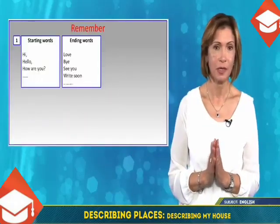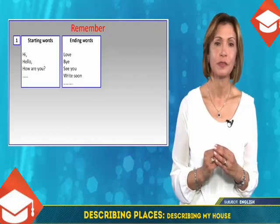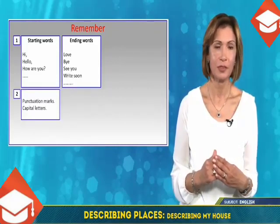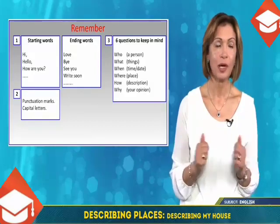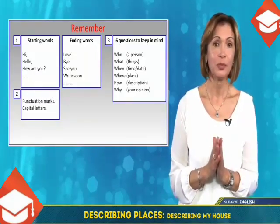Is it clear? Let's sum up: after 'there is' we use a singular noun; after 'there are' we use a plural noun. Now let's start the writing. You are going to write an email of six lines to your friend to tell him about your home. Pay attention to spelling mistakes. Keep in mind: the starting and ending words, punctuation marks, capital letters, and the six questions — who, what, when, where, how, and why — which will help you write your email.